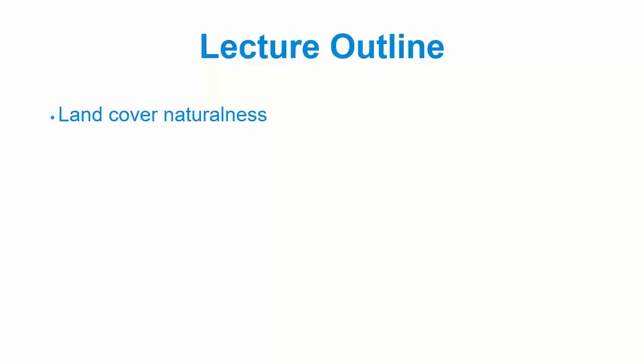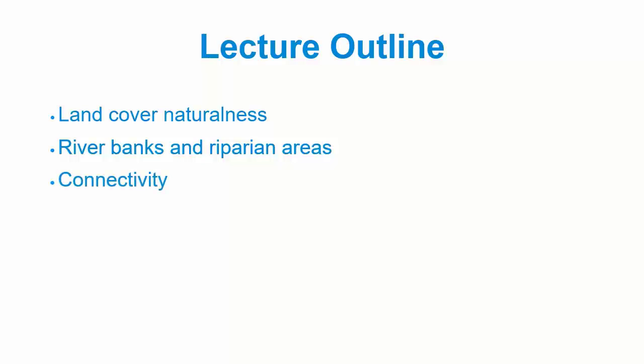We'll begin by looking at the basin landscape as a whole, considering the naturalness of its land cover. Then we'll focus more specifically on the margins of water bodies, their banks and riparian areas. And finally, we'll look at the importance of connectivity in aquatic systems, which determines the ability of aquatic species to move between different aquatic habitats they need over the course of their life cycle. As before, for each I'll begin by describing conditions in their natural and healthy state, and then look at anthropogenic changes. For each topic, I'll also present one or more assessment techniques that can be used to assess the health of basin conditions.